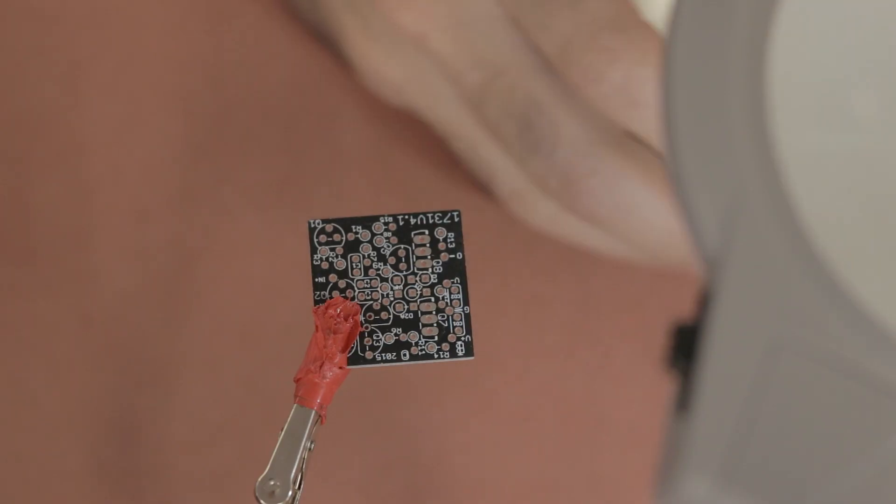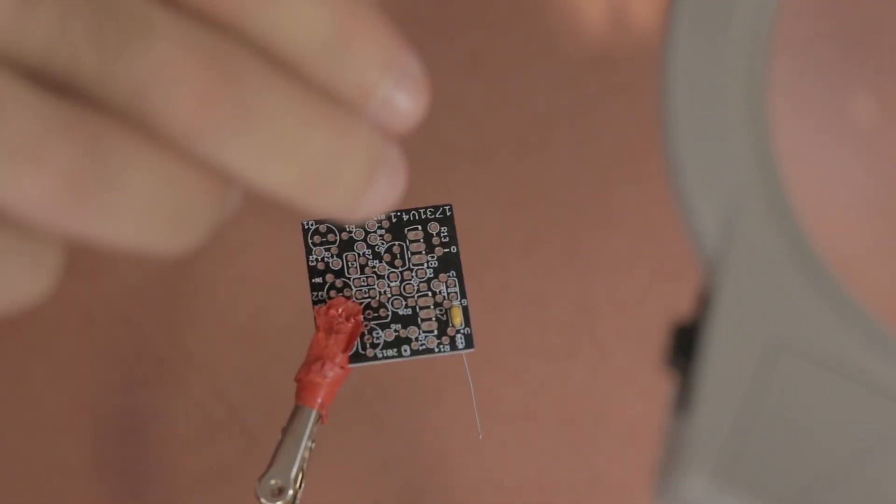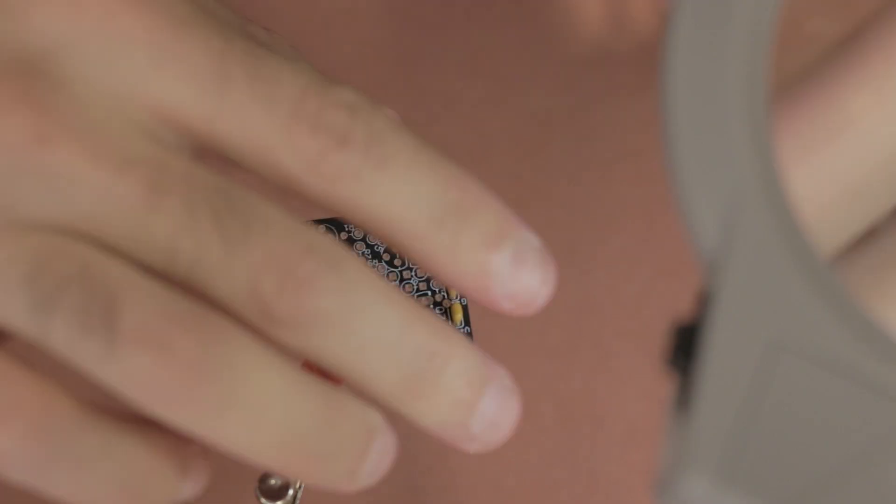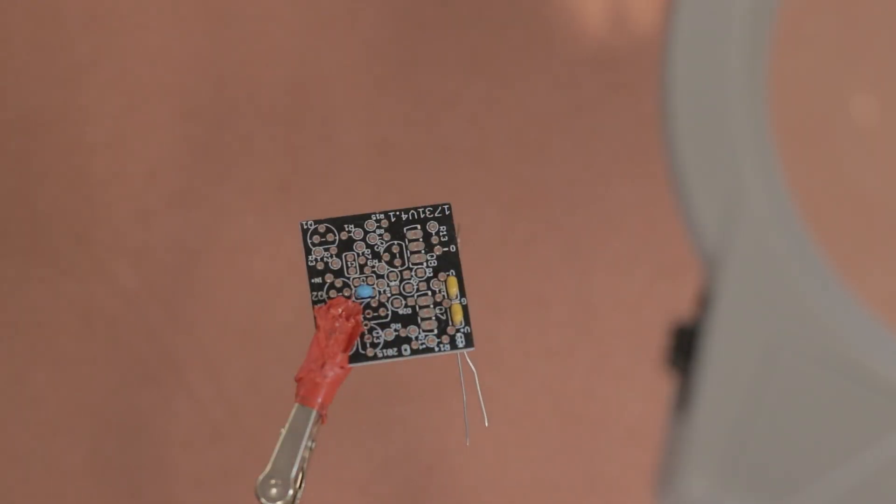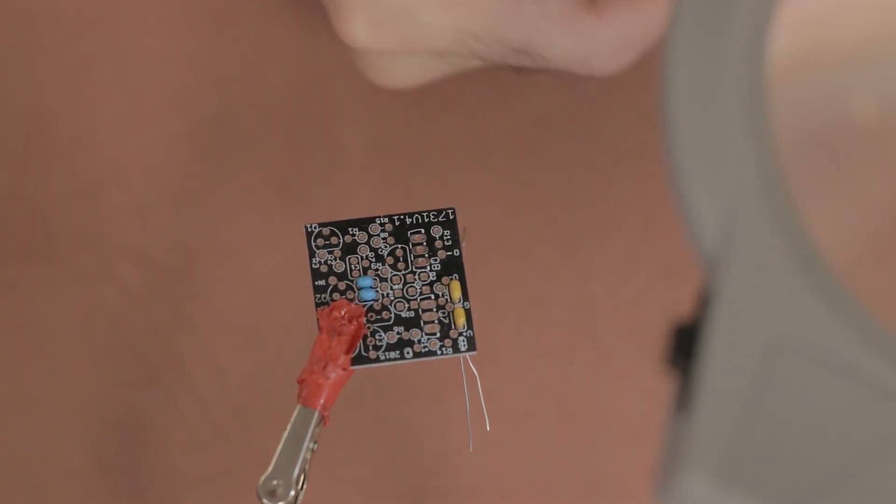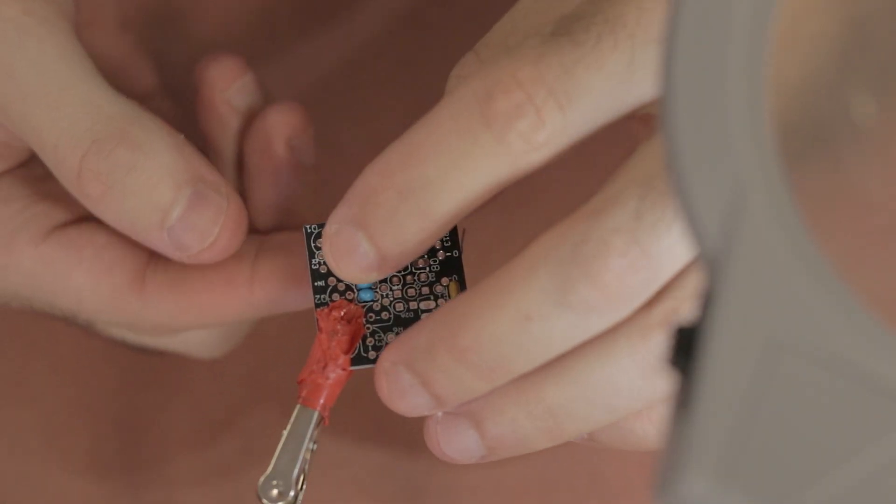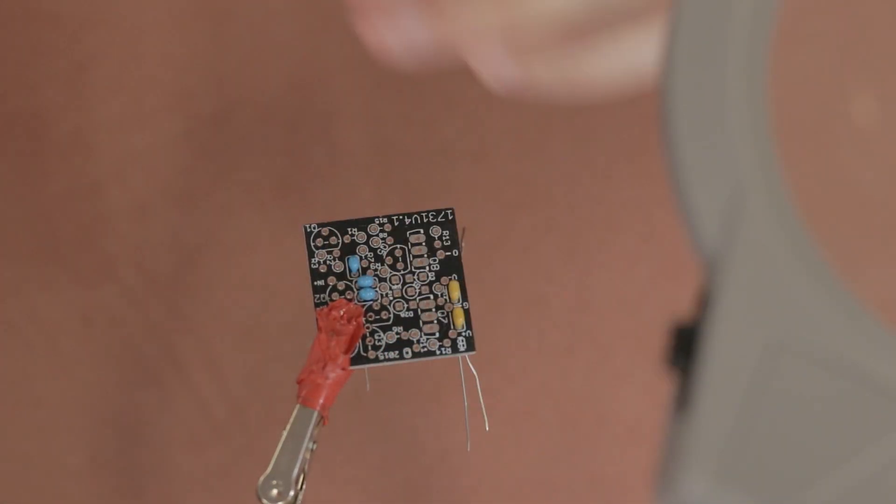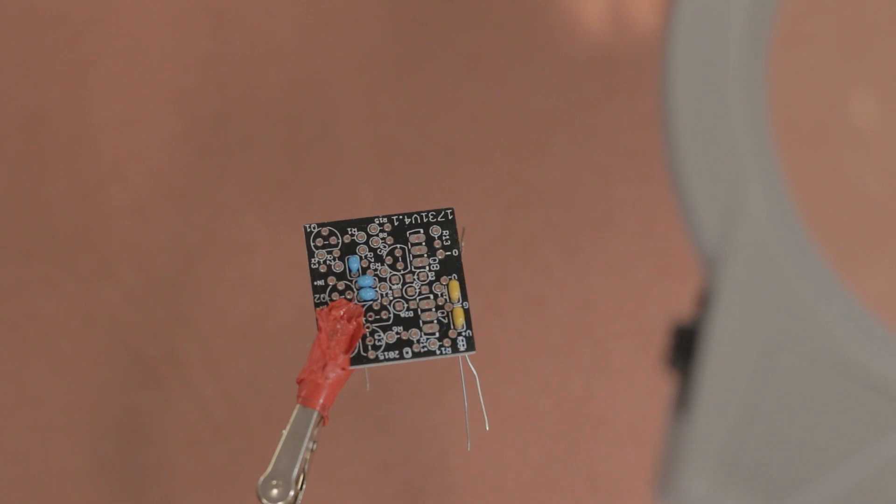And the first thing you want to start with are the small bag of caps, and the first components to place are these two yellow caps that are the same value, and then there's three other blue capacitors. You'll want to check the value of C1, it's 680p, and the other two are 10p for C2 and C3, so make sure you place them in the right spots on the board.